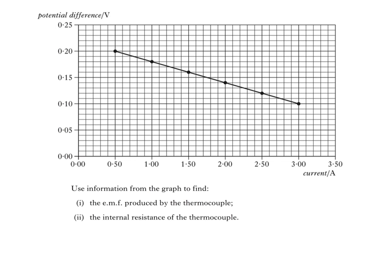We're asked to use information from the graph to find the EMF produced by the thermocouple and the internal resistance of the thermocouple. What's happened in the circuit is that the resistance of the variable resistor has been decreased, causing the current in the circuit to increase. As current increases, the PD across the thermocouple — the TPD, or terminal potential difference — decreases. To find the EMF, all we have to do is continue our line back to where it intercepts the y-axis. So the EMF produced by the thermocouple is 0.22 volts.